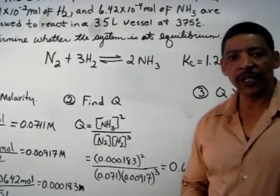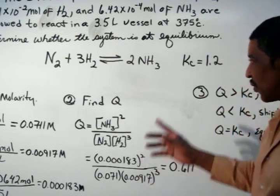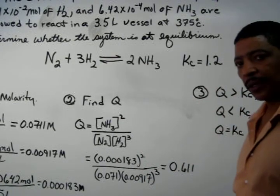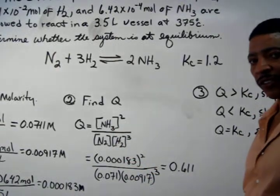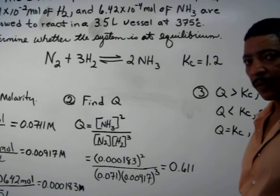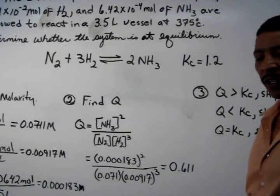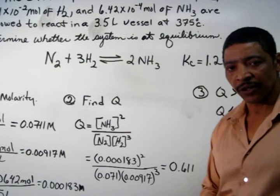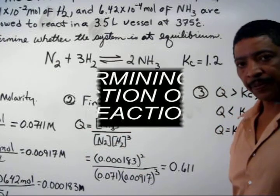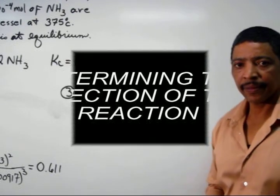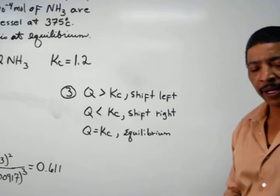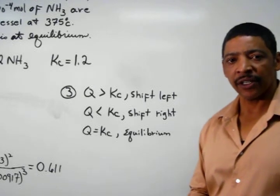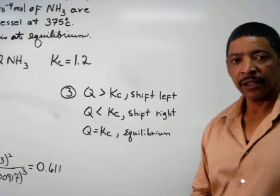Since the original Kc value for this reaction was 1.2 and the calculated value from this data is 0.611, what I've actually calculated in this case is called the reaction quotient, or simply Q. After calculating the value of Q, it is now possible to determine in which direction the reaction should shift to reach equilibrium.